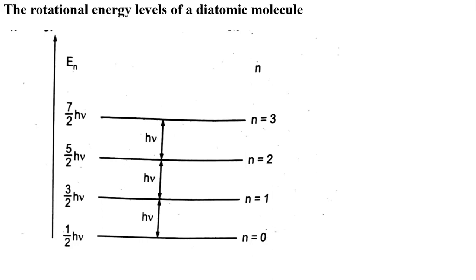In addition to the selection rule, the molecule must possess a dipole moment. As a dipolar molecule rotates, the rotating dipole constitutes the transition dipole operator μ. Molecules such as HCl and CO will show rotational spectra, while H2, Cl2, and CO2 will not.